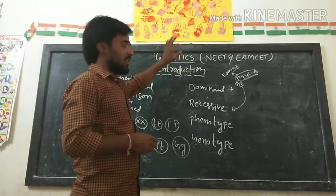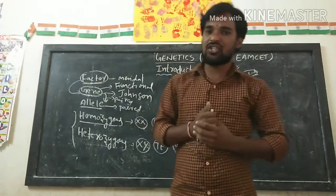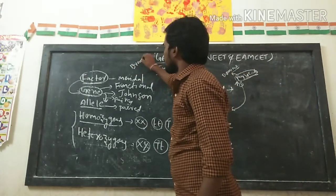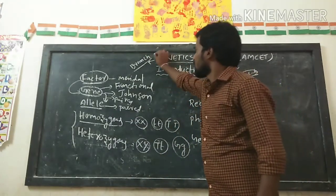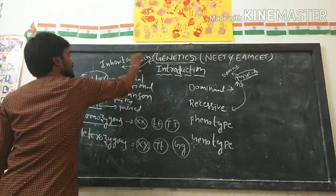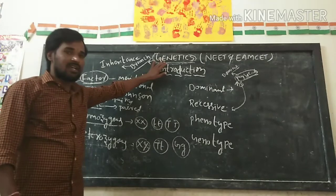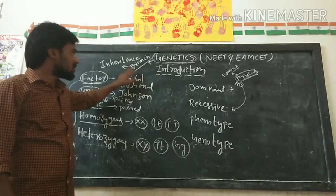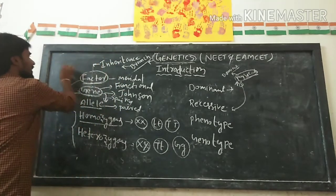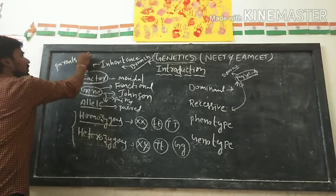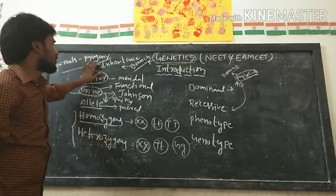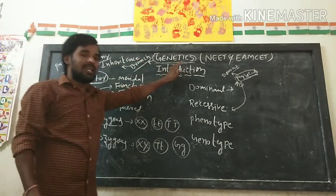Now I am going to build a definition for genetics. What is meant by genetics? Genetics is a recent advanced science branch which deals about inheritance characters. What is meant by inheritance? Inheritance means the characters which are transferred from parents to the progeny. Such type of characters are called as inheritance, and such branch is called as genetics.